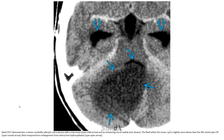Additional imaging demonstrates axial contrast-enhanced sequences showing a classic cerebellar pilocytic astrocytoma with macrocystic component. The T2 hyperintense solid component and enhancing mural nodule are indicated. Note the temporal horn enlargement from associated obstructive hydrocephalus, indicated by the arrow.